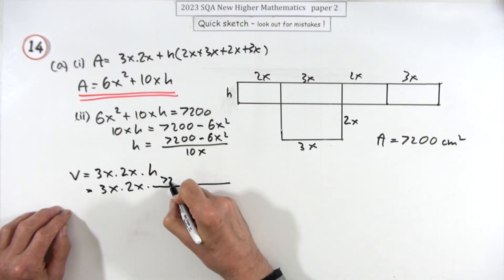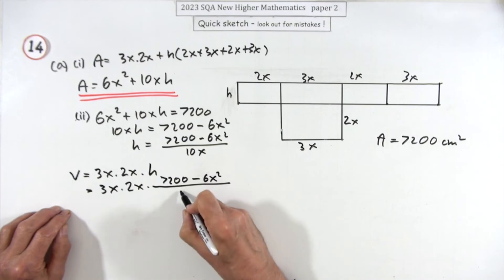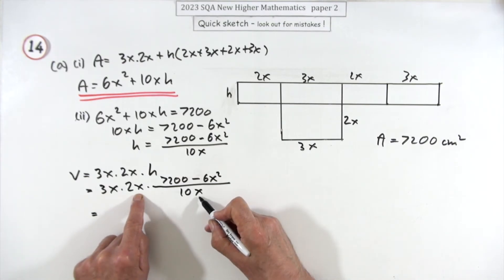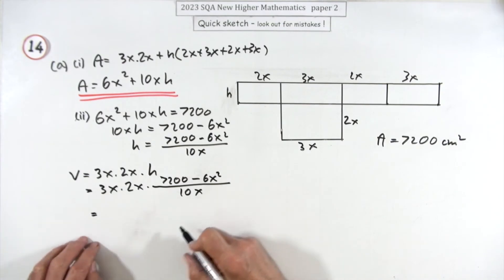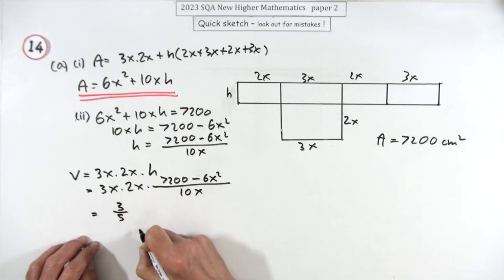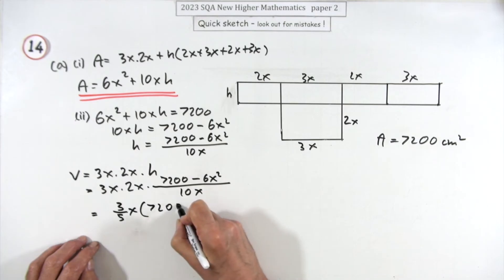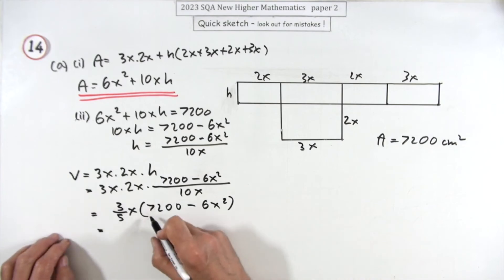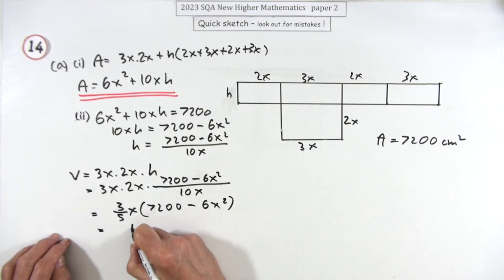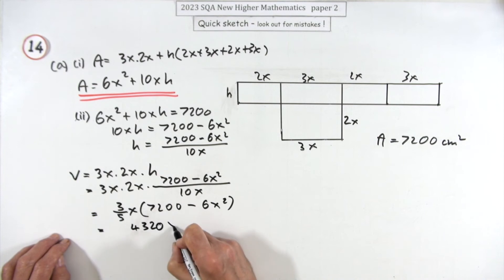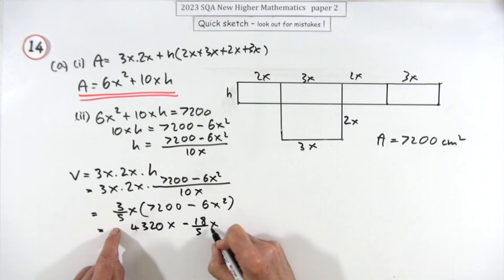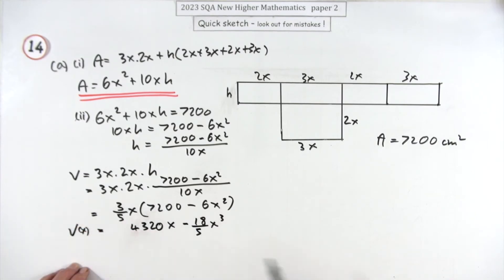So V = 3x × 2x × (7200 − 6x²) / 10x. Tidying up: one x cancels, 6 over 10 gives 3/5, so we get (3/5)x(7200 − 6x²), which expands to 432x minus (18/5)x³. That's V in terms of x.